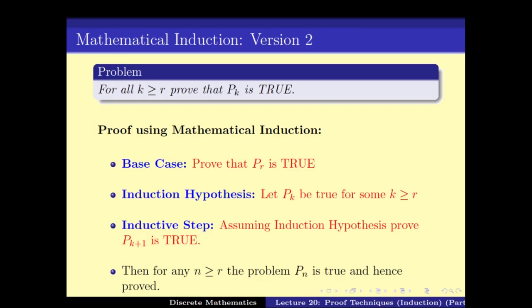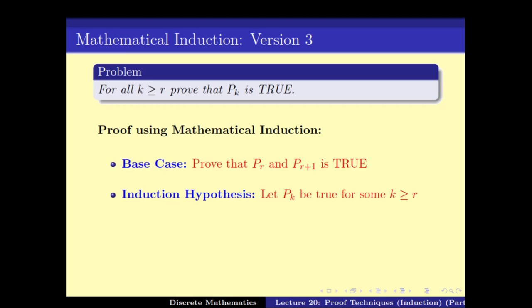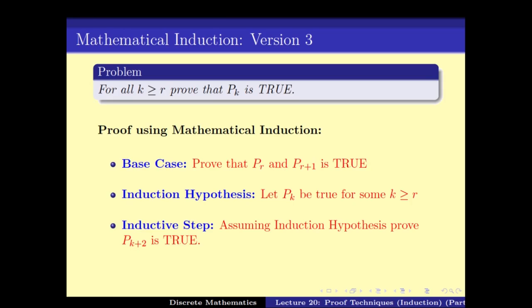Sometimes proving that Pk implies Pk+1 might not be easy. We might instead be able to prove that Pk implies Pk+2, which may be an easier step. In that case we need a different version: first prove both Pk and Pk+1 are true as base cases, and then for any k, assuming Pk is true, prove Pk+2 is true. This would cover all the cases.